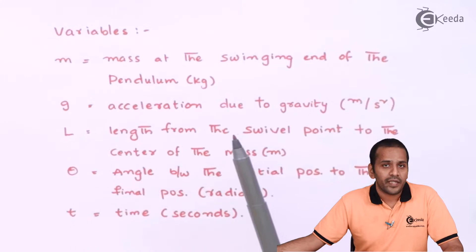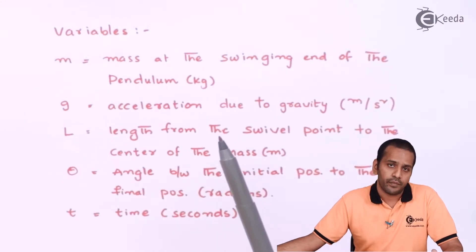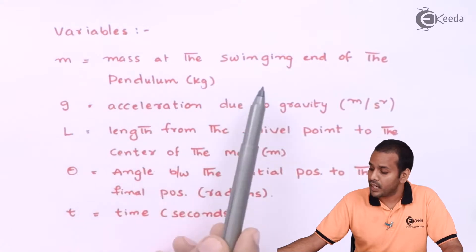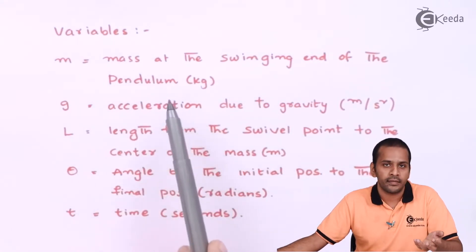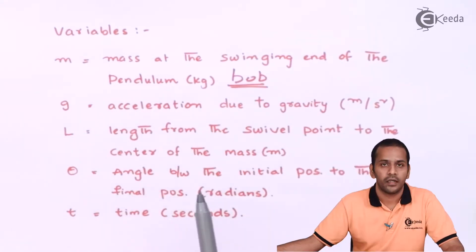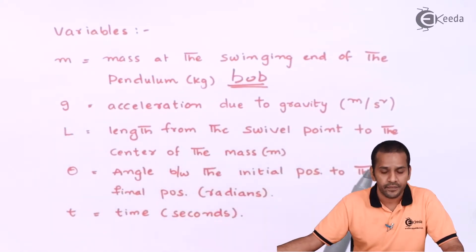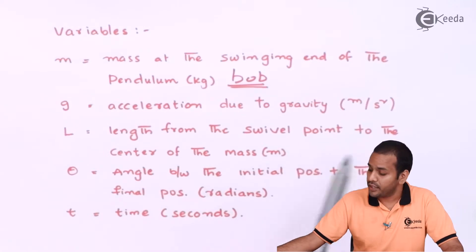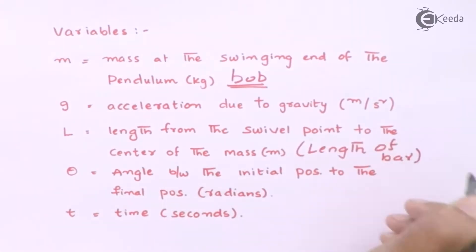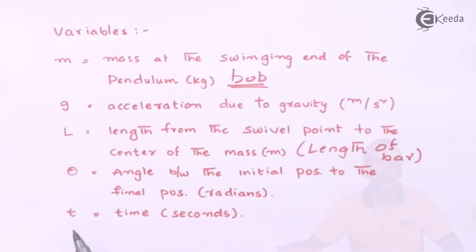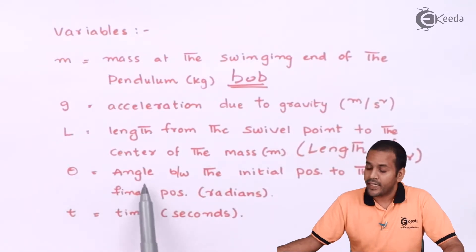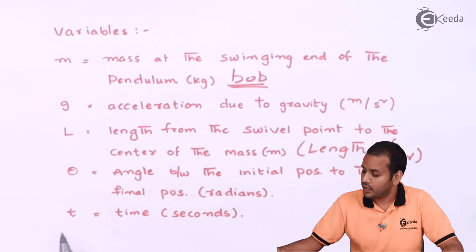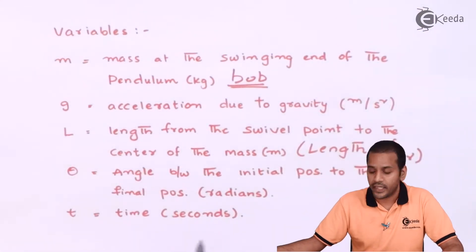Let us define the variables. Small m represents the mass of the bob (the swinging end of the pendulum). Small g represents acceleration due to gravity. Capital L represents the length from the pivot point to the center of mass — the length of the bar. Theta represents the position of the pendulum, and t represents time in seconds.